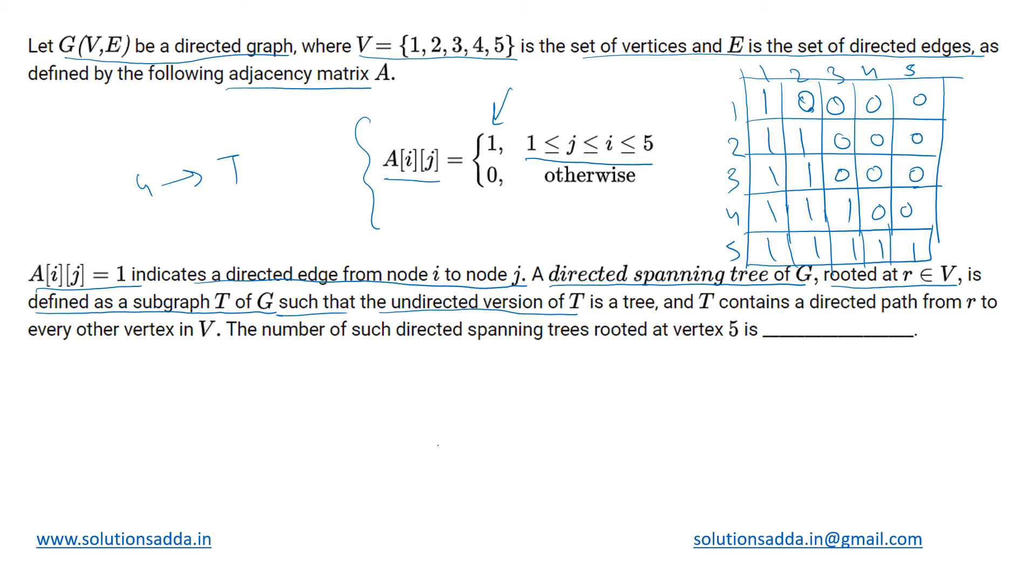Whatever part we have taken out of that graph, when we convert that part from directed to undirected, we convert its directed edges to undirected. Then that should result in a tree, and that tree should contain a directed path from r to every other vertex in V, which basically means that...